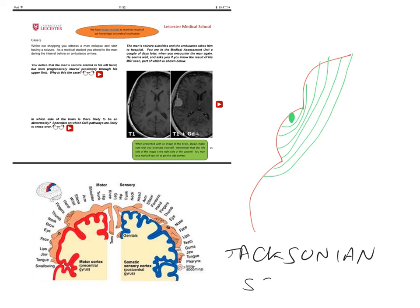Okay, so this is a Jacksonian seizure named after the American neurologist Hugh Lings Jackson, and all that a Jacksonian seizure refers to is this progression through the homunculus of seizure activity leading to activation of adjacent regions of the cortex.